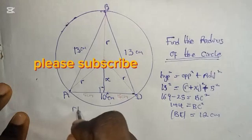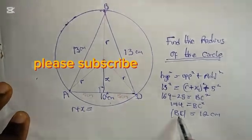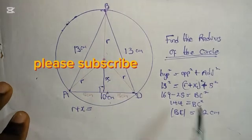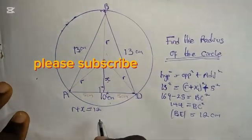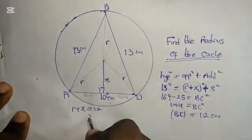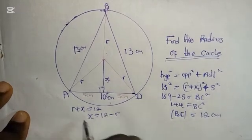Now, we said R + X, don't forget, line BC is R + X. So R + X = 12 cm. Therefore, X = 12 - R.